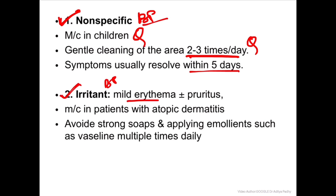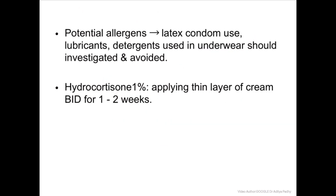Next is irritant balanoposthritis - mild erythema with or without posthitis will be present. It most commonly occurs in atopic dermatitis cases. Treatment: avoid strong soaps and apply emollients such as Vaseline multiple times daily. Potential allergens include latex condoms, lubricants, and detergents used in underwear washing. These should be investigated and avoided.